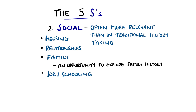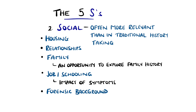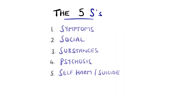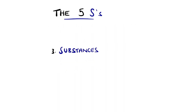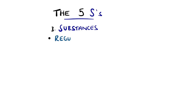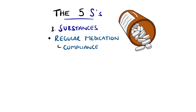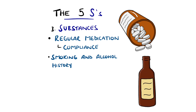Job or schooling would also come up here, if that hasn't already been asked, as well as the impact the presenting problem has had on the job or school. Forensic history can also be included here, which may then impact the risk assessment later on. The third S stands for substances, where regular medication is also included, and confirming compliance with medication if they've been prescribed any. Substances also include smoking and alcohol history, and importantly any illicit or recreational drug use.